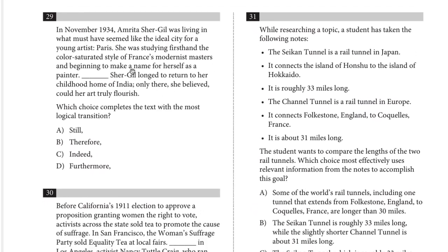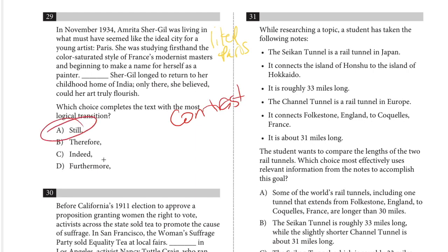Number twenty-nine: in November 1934, an artist was living in what seemed like the ideal city for a young artist — Paris. She was studying the color-saturated style of France's modernist masters and beginning to make a name for herself as a painter. However, she longed to return to her childhood home of India; only there, she believed, could her art truly flourish. We need a contrast word. 'Nevertheless' fits — it's a contrast, similar to 'nonetheless' or 'despite this.'